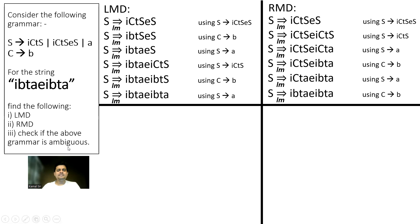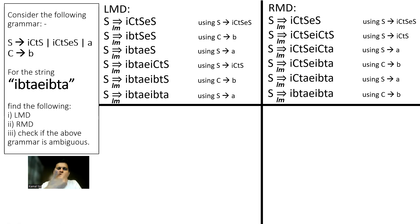Now we check if the grammar is ambiguous. A grammar is ambiguous if it can derive at least one sentence using more than one LMD or more than one RMD. So we have to start with B, and we will see that the sentence has two LMDs.